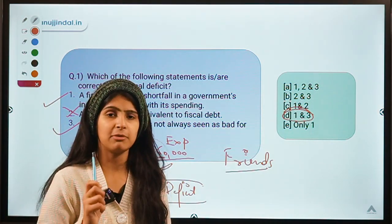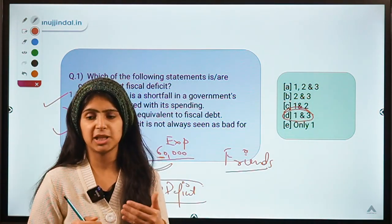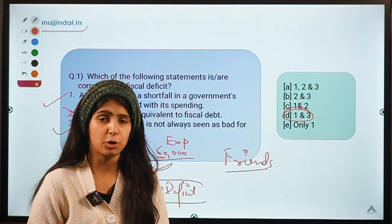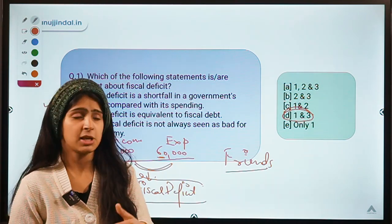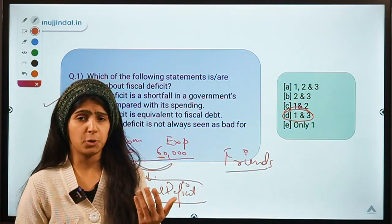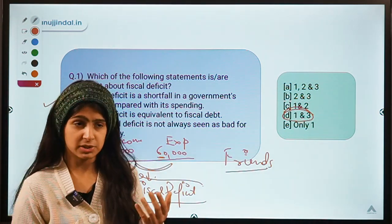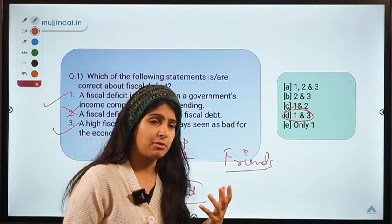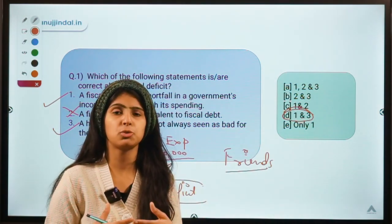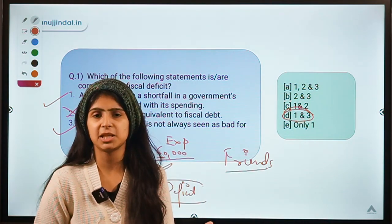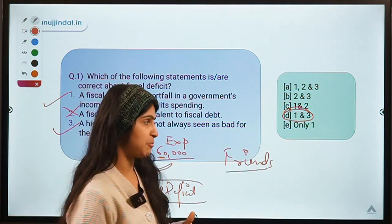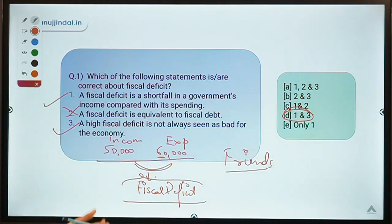Just as you don't have the income to cover this deficit and resort to borrowing from your friends, similarly when the government faces such a situation they also resort to borrowing. The government can issue bonds and borrow money from the public, borrow from other countries, or borrow from multilateral organizations. Usually government issues bonds in order to raise money to cover their expenditure.